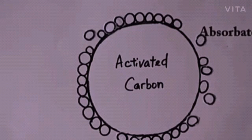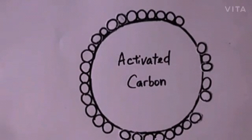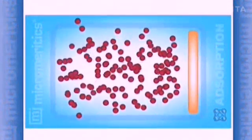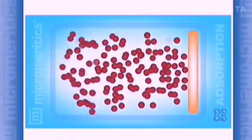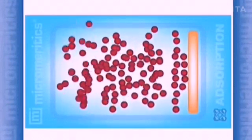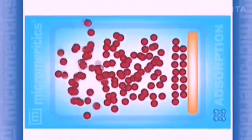Activated carbon has a significant surface area due to the immense number of forces present on it. For instance, let's consider some adsorbate particles randomly moving nearby the surface of an adsorbent. As we can see, the first layer starts filling up eventually with weaker bonds, and irrespective of whether it's filled, the second layer starts filling up and continues.